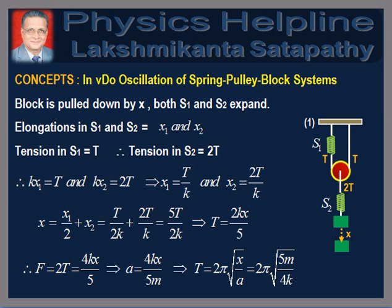In the first case, when the block is pulled down by distance x, both the springs S1 and S2 undergo elongation. Let the elongation in the springs S1 and S2 be x1 and x2. Let the tension in the spring S2 be equal to 2T. Therefore, we have kx1 = T and kx2 = 2T. This gives x1 = T/K and x2 = 2T/K. When spring S1 expands by x1, the pulley moves down by x1/2. Also, spring S2 expands by x2. Therefore, the block moves down by a distance x1/2 + x2. Therefore, we write x = x1/2 + x2. Putting the values of x1 and x2, we get x = T/2K + 2T/K, which is equal to 5T/2K.